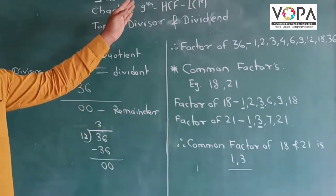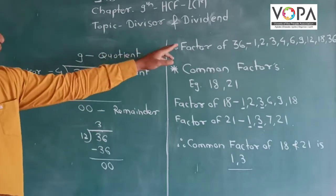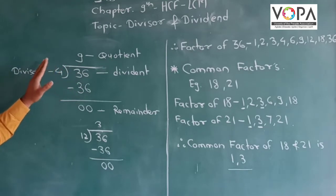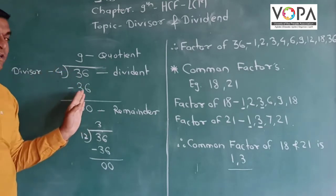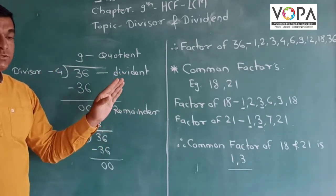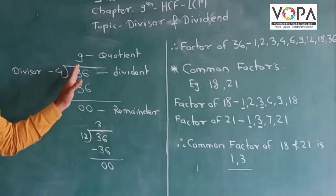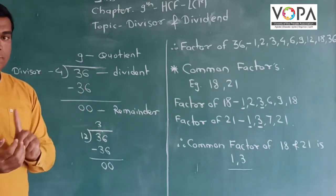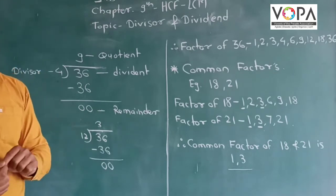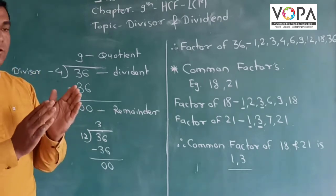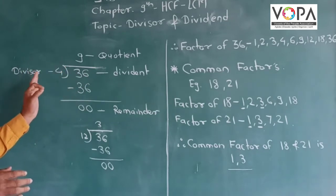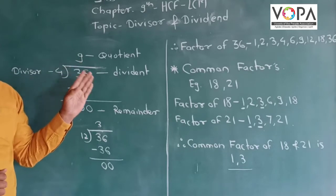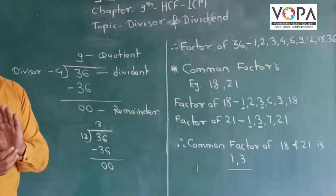So for HCF and LCM, what is a factor? 36 is divided by 4, and we get the remainder of 0. So 4 is a factor of 36. This means that whenever we divide any number by that number and if we get the remainder as 0, then this number is called a factor of that particular number.